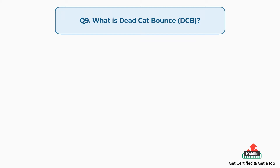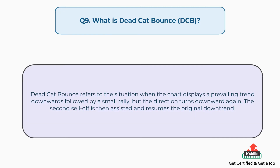Question number 9: What is a dead cat bounce? Dead cat bounce refers to the situation when the chart displays a prevailing trend downwards followed by a small rally, but the direction turns downward again. The second sell-off is then assisted and resumes the original downtrend.